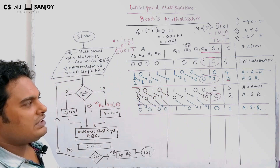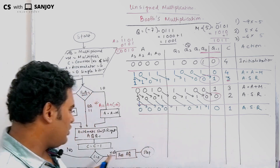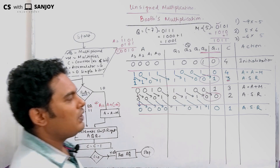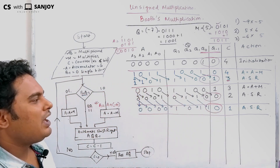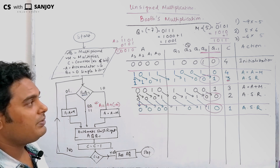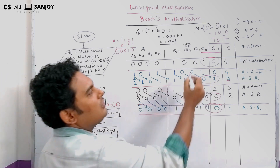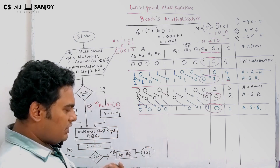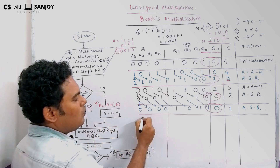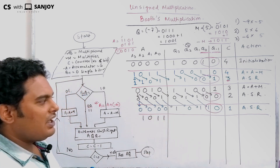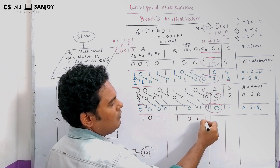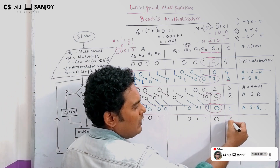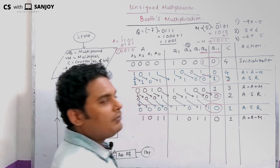Now A is shifted and we check the counter value, which is 1. We check the pair Q0 Q-1, and it is now 1,0. Since Q0 Q-1 is 1,0, we do A equals A plus of minus M. Minus M is 1011. So we add 0000 plus 1011, getting 1011 as the accumulator result. A becomes 1011. Now we perform arithmetic shift right: A shifts right retaining MSB 1, bits shift into Q positions.